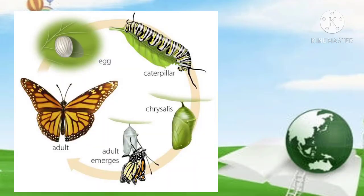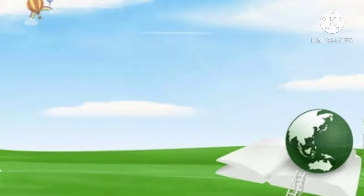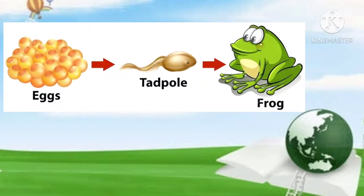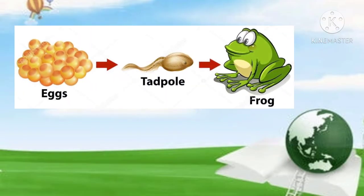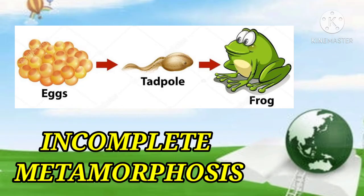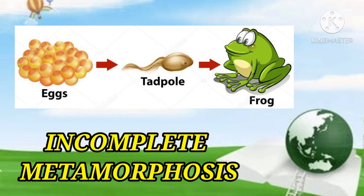Aside from developing through an egg, larva, pupa, and to adult, there are living organisms that only grow in three stages. They undergo what is called incomplete metamorphosis.